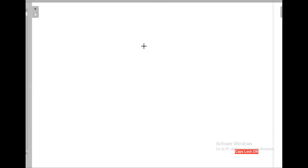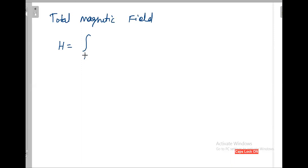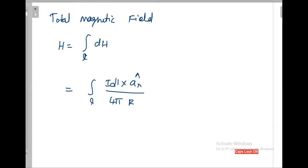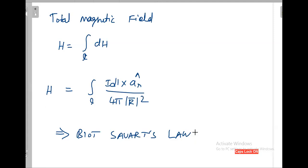What is the total magnetic field? To calculate the total magnetic field, H is equal to the line integral over the line carrying the current of dH. The expression for dH is I dL cross r̂ divided by 4π r². This is called Biot-Savart Law — this is the basic formula to calculate the total magnetic field.